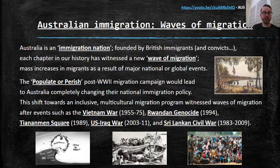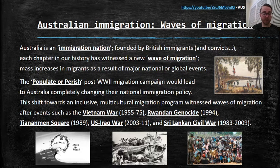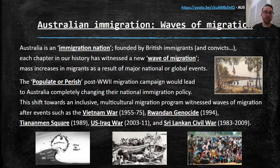Australia is an immigration nation, founded by British immigrants and convicts. Each chapter in our history has witnessed a new wave of migration — the gold rush, the first settlers who came out with Captain Cook, post-World War II migration, the Vietnam War, and so on. These waves of migration are basically mass increases in migrants as a result of major national or global events.